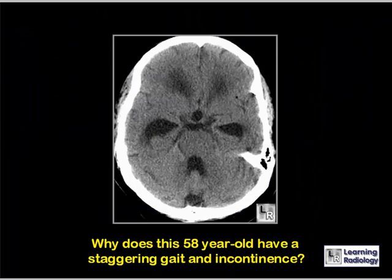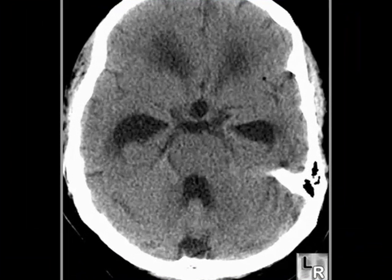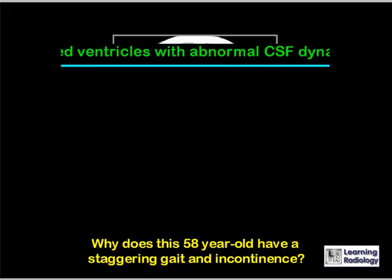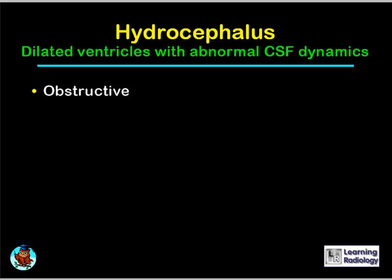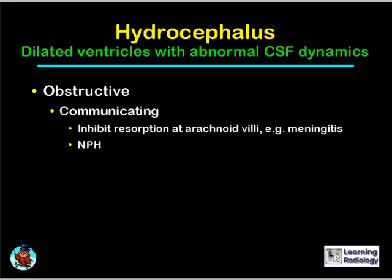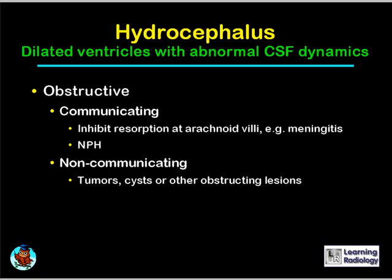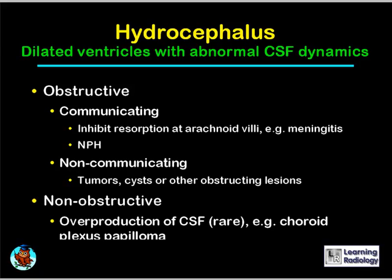Why does this 58-year-old have a staggering gait and incontinence? Hydrocephalus is defined as dilated ventricles with abnormal cerebral spinal fluid dynamics, divided into two major groups: obstructive hydrocephalus — including communicating, where there is inhibition of CSF resorption at the arachnoid villi (e.g., from meningitis or normal pressure hydrocephalus) — and non-communicating obstructive hydrocephalus due to tumors, cysts, or other lesions. Non-obstructive hydrocephalus results from overproduction of CSF, much less common, caused by something like a choroid plexus papilloma.